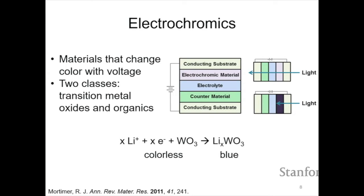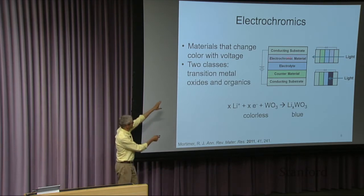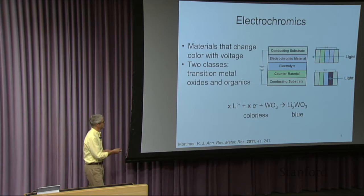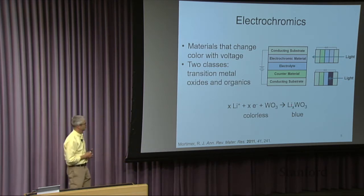The most promising solution that the biggest companies are pursuing are so-called electrochromics. And these are materials like tungsten oxide that change color when they're reduced. And so you can have a device where there's two conducting electrodes, something like indium tin oxide. And on one of them, you have the electrochromic material. On the other, you also have a material that's capable of being oxidized and reduced.